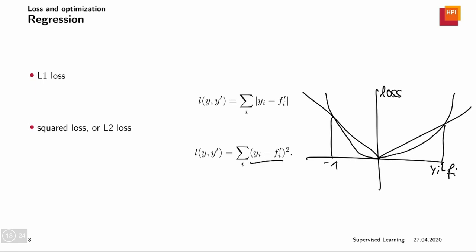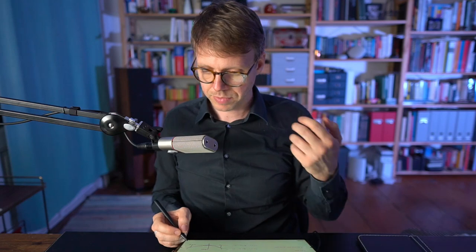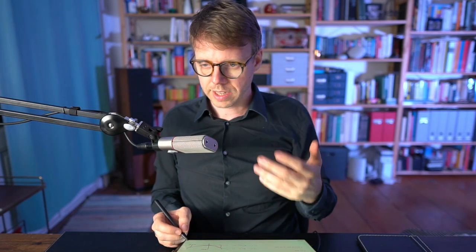So the L2 loss would allow for many small deviations, because it would get very small values here, whereas the L1 loss would try to actually avoid even small deviations and go to zero. However, if you look at large deviations between fi and yi, then the L1 loss is actually lower. That means that it is willing to accept large deviations. For example, because you may have erroneous labels in your data. So outliers is what we would call them.